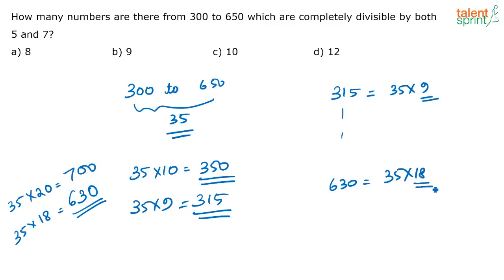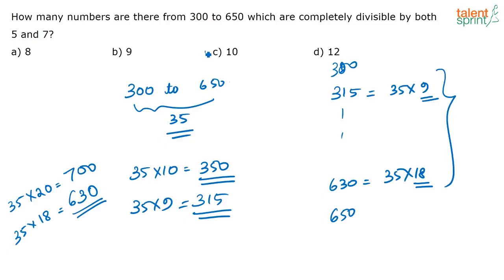All multiples of 35 from 35 × 9 through 35 × 18 fall between 300 and 650. Counting from 9 to 18 inclusive — that is 9, 10, 11, 12, 13, 14, 15, 16, 17, 18 — gives us 10 such numbers. The correct answer is option C, which is 10.